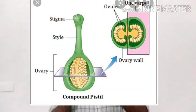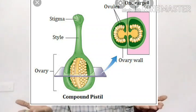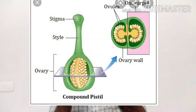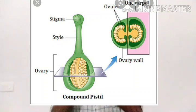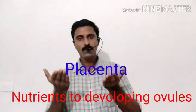Each carpel has three main parts: a solid basal portion called the ovary, a long stalk called the style, and the stigma. The stigma has receptive discs for the collection of pollen grains. The ovary has an ovarian cavity called the locule — it may be unilocular, bilocular, trilocular, or multilocular. The ovarian cavity contains ovules, which are borne on a specialized tissue called the placenta. The placenta provides nutrients to the developing ovules.